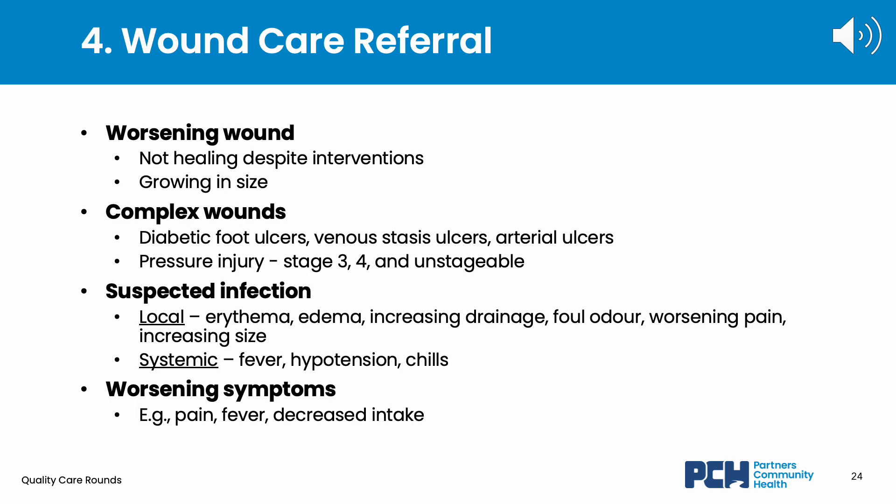So now that we have described general and wound-specific management strategies, when should staff call the MD or NP for guidance? First, if the wound is worsening — not healing despite staff interventions or growing in size — these situations may require more unique wound instructions, so a referral should be placed. Second, a referral should be sought for complex wounds to rule out infection and for possible special orders such as packing and wound-specific dressings. Some examples of complex wounds include diabetic foot ulcers, venous stasis ulcers, arterial ulcers, and advanced pressure injuries which include stage 3, 4, and unstageable wounds. Third, referrals should be sought if staff suspect infection. What this may look like locally at the wound is erythema, edema, increasing drainage, foul odor, worsening pain, or increasing wound size. A more severe systemic infection should be suspected if the resident develops a fever, hypotension, or chills. And finally, a referral should be sought if the resident's symptoms are worsening such as increasing pain, a fever, or decreased intake. Ultimately, simple wounds should be managed independently by staff, whereas these four situations outlined necessitate a wound care referral for guidance.